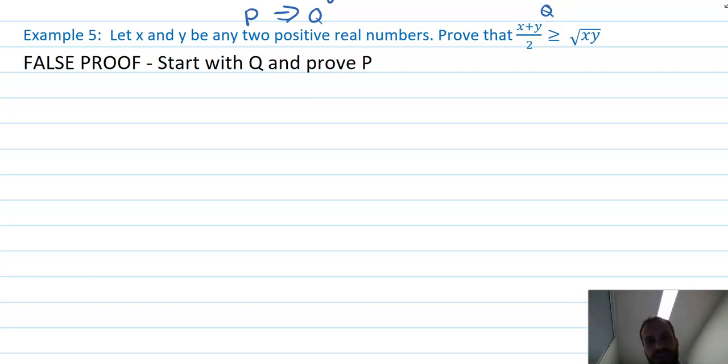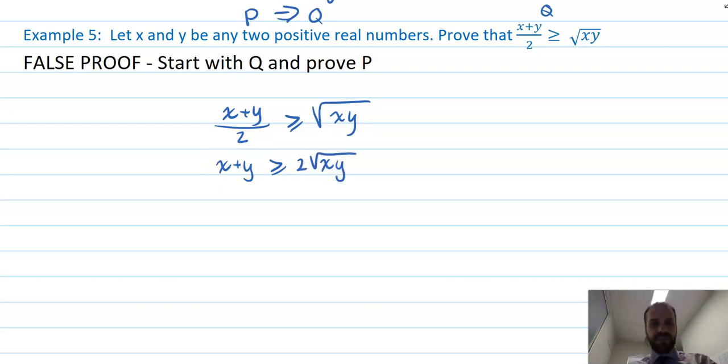So let's just start working with it. (x + y)/2 is greater than or equal to √xy. All right. And let's see what happens. I'm going to multiply both sides by 2. Why? Just because, just because it feels good. That's, if this didn't work, I'd have to go away and try something else. All right.